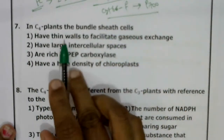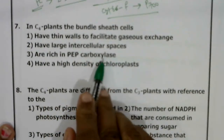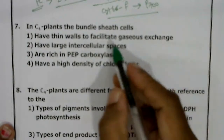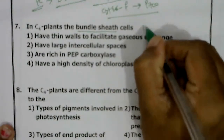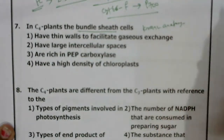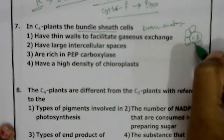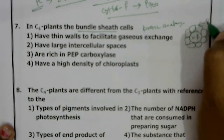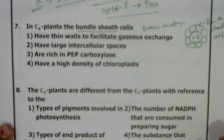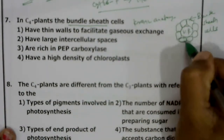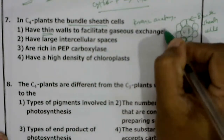Next question: in C4 plants, bundle sheath cells have thin walls, large intercellular spaces, are rich in PEP carboxylase, or have high density of chloroplasts? In C4 plants, Kranz anatomy is present — vascular bundles surrounded by large thick-walled cells called bundle sheath cells. The walls are thick, not thin, and are impermeable to gaseous exchange, so the first option is wrong.